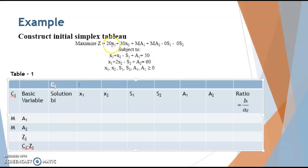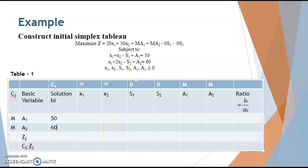Looking at the coefficients in the objective function: for x1 it is 20, for x2 it is 30, for s1 and s2 it is 0, for a1 it is M, and for a2 it is M. To find the solution bi, we put all non-basic variables equal to 0. This gives a1 equals 50 and a2 equals 60.